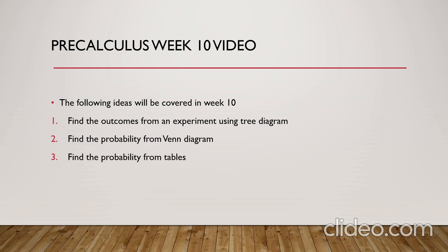Probability of A given B, which is the conditional probability, equal to the probability of A intersection B divided by the probability of B. Probability of A minus B equals the probability of A minus the probability of B.